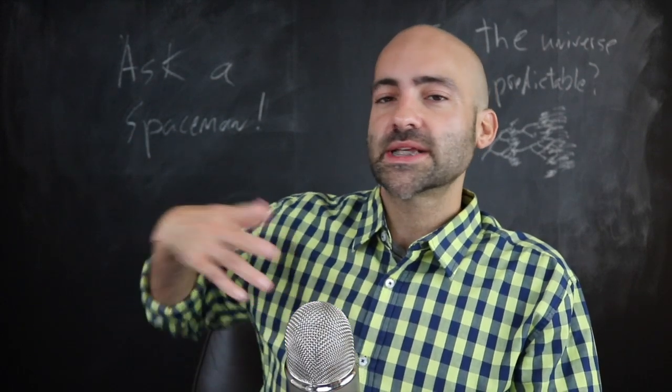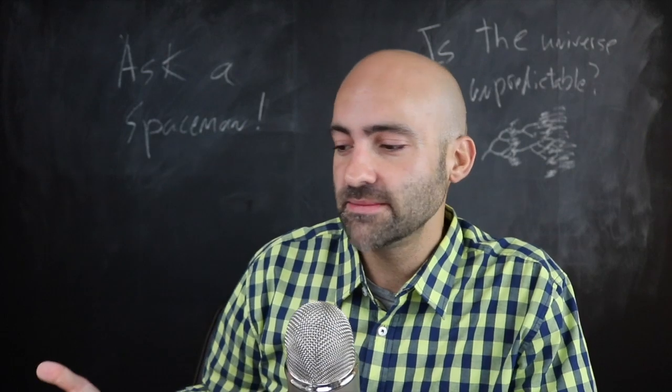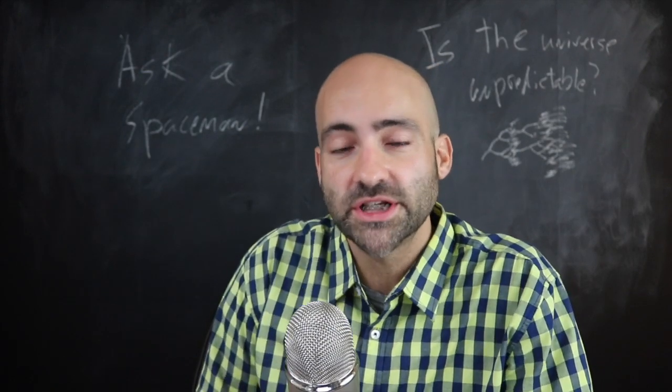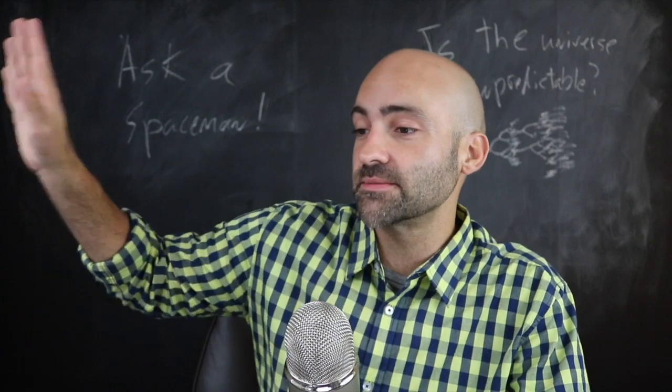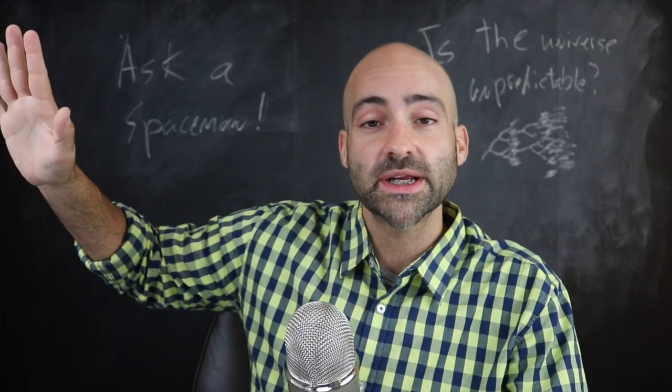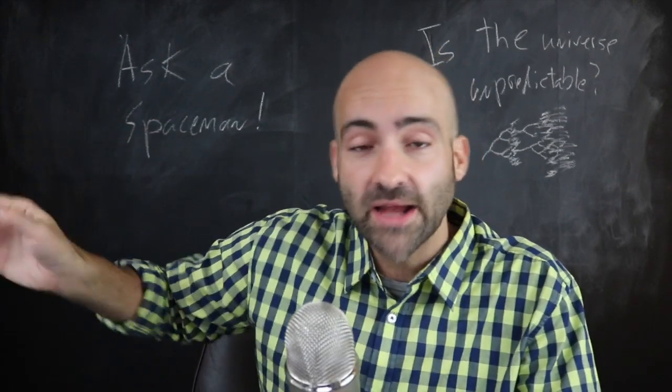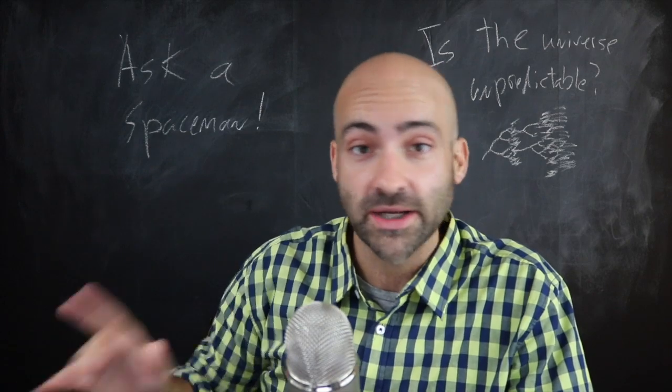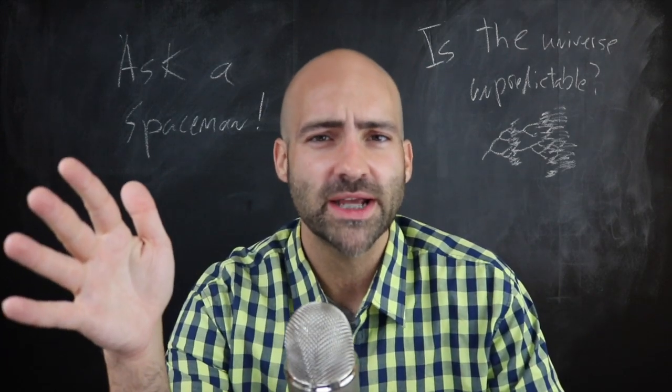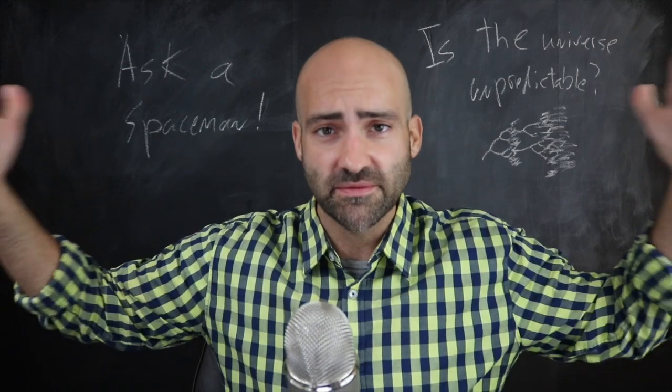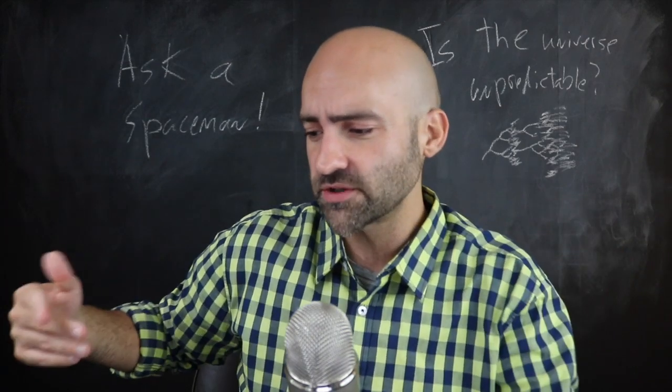So at first glance it seems like it's impossible to make progress, that we just can't make predictions. Chaotic systems are chaotic, they're totally unpredictable. We will never figure out what's going on. But there are some mysteries here. It's a branch of science, a branch of mathematics, a branch of physics.